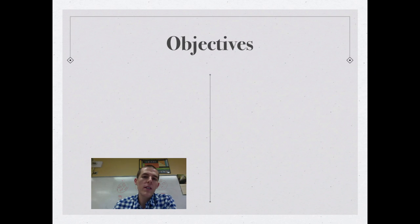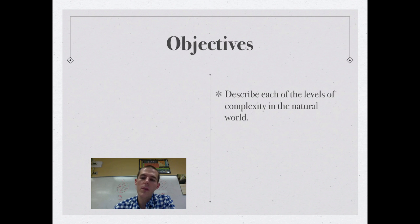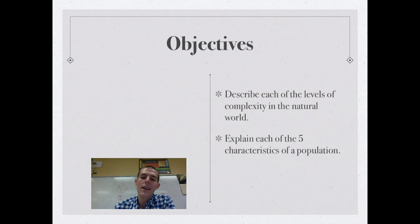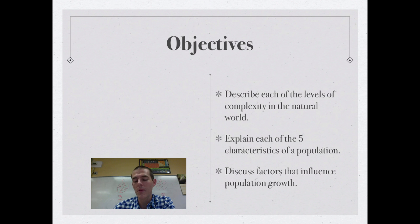By the end of this video, three things that you should know or be able to do. First, describe each of the levels of complexity in the natural world. Second, explain each of the five characteristics of a population. And finally, discuss factors that influence population growth. So obviously today is all about populations.